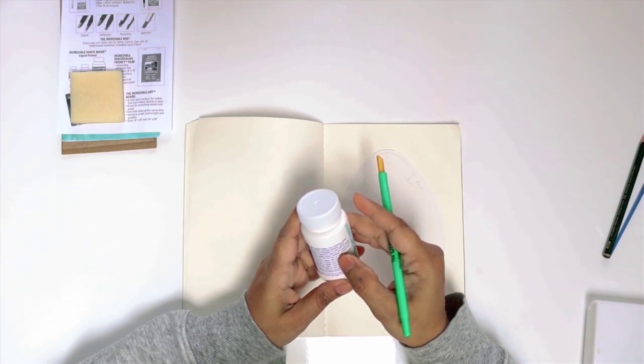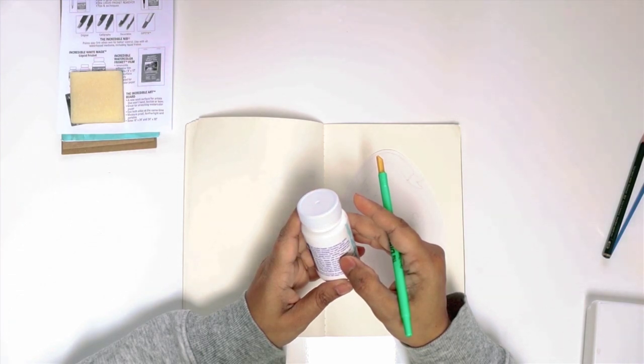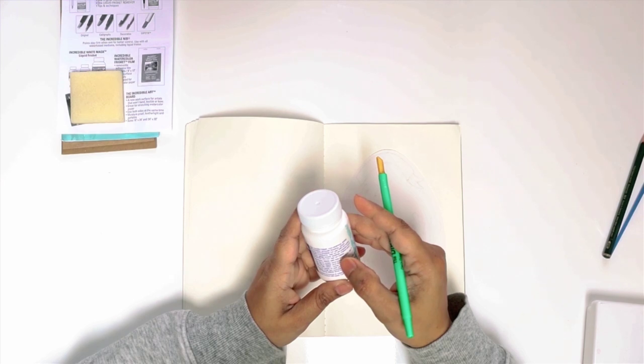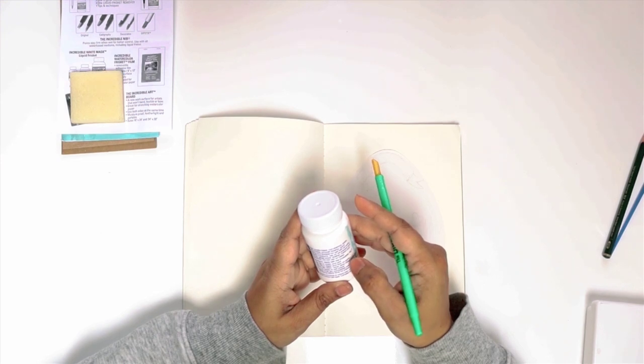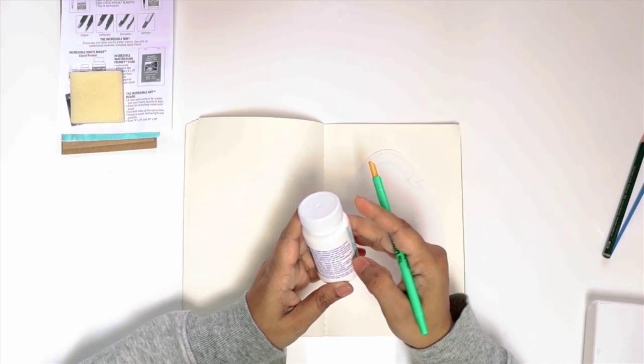It says high quality frisket, non-staining, easily removable, smooth flowing, quick drying, and tintable. For use with all water-based mediums. Use on art papers, board, glass, wood, leather, metal, and ceramics. Do not use on fabric. It does not talk about the plastic, so hence the experiment.